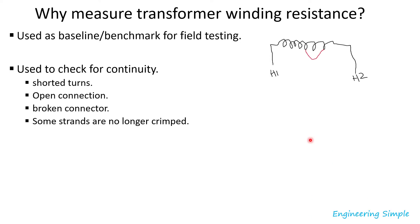Winding resistance can also be used to check for continuity. Since transformers are built by operators, there's a lot of work involved and things can go wrong. For example, if you have a winding with terminals H1 and H2 and some turns become shorted — say the insulation is scratched — resistance measurement could detect this problem, although it may take many shorted turns before a measurable difference appears.